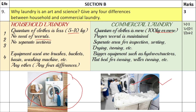In household laundry there is no need for records — you wash and dry out the clothes. In a commercial laundry you need a proper record of when to return items and what the charges are. In household laundry there are no separate sections or departments — one person can do all tasks. But in a commercial laundry, you have separate departments for inspection, sorting, drying, ironing, marketing, and sales.